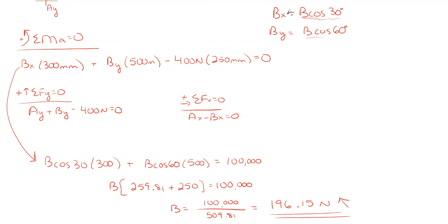So what's remaining is that I have to find A sub x and A sub y. Well, I already have B sub x and B sub y written in terms of B, so we can go ahead and find those out. So B sub x would just be 196.15 newtons times the cosine of 30, which gives me 169.87 newtons to the left. And then B sub y would be the same thing multiplied by cosine of 60, which is 98.08 newtons in the upward direction.